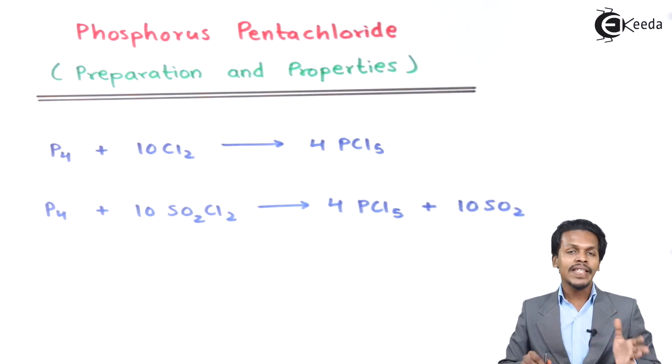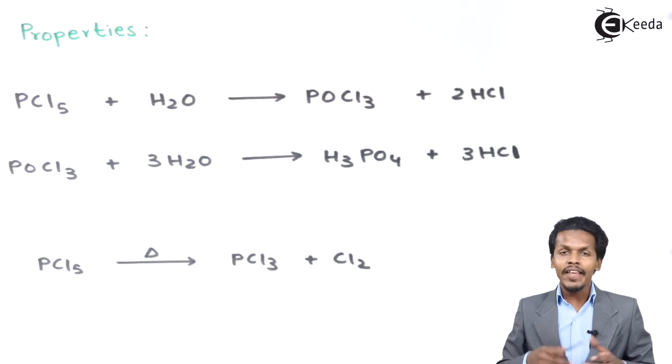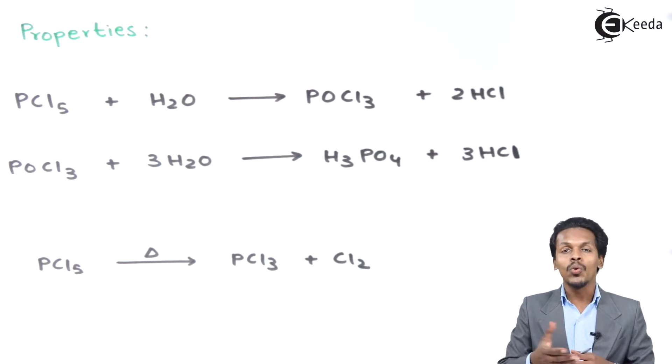Talking about the properties of PCl5: PCl5 is a yellow-whitish powder that sublimes below 373 Kelvin. There are certain chemical reactions I am going to talk about related to PCl5.